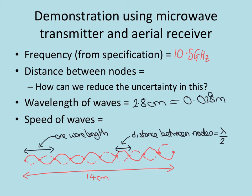The speed of the waves we can then find using frequency times the wavelength using the wave equation which will give us 10.5 times 10 to the 9 hertz times by our wavelength 0.028 which you should find comes out at approximately 3 times 10 to the 8 meters per second.